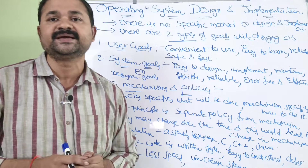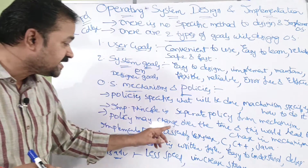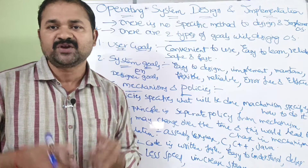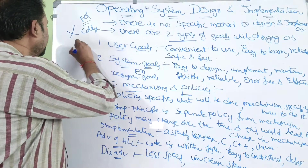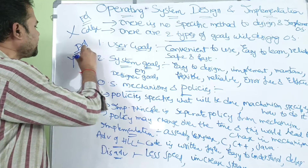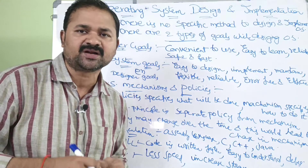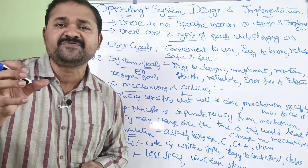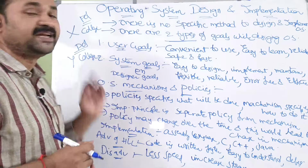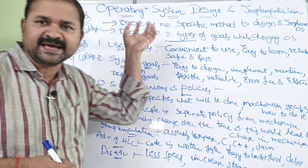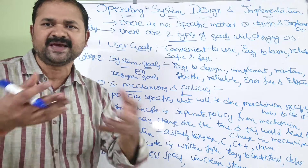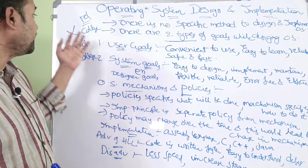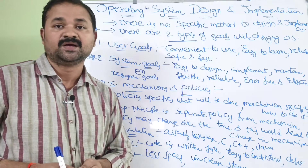Why should they be independent? Because the policy may change over time, and this would lead to a change in the mechanism. For example, after one month, our target may change to developing an app for a different college. If policy and mechanism are both separated, then with minor modifications in the mechanism we can implement that new policy, because the two colleges may have several common features. That is why it is better to separate policy from the mechanism.